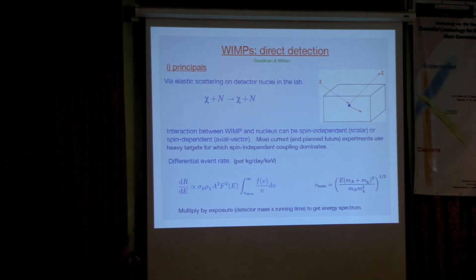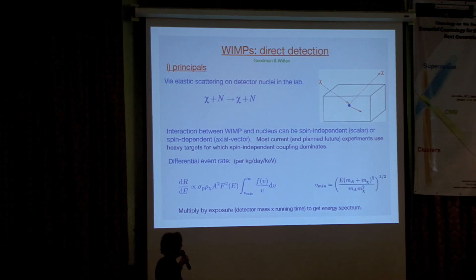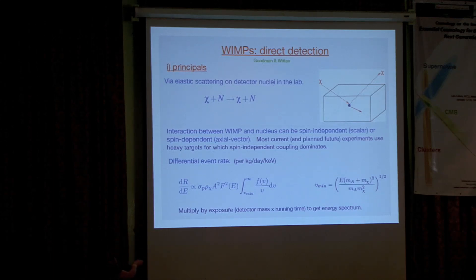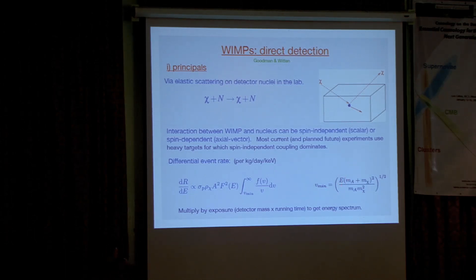There are two types of interaction between the WIMP and the nucleus: spin-independent and spin-dependent. I'll focus entirely on the simpler spin-independent interaction, partly because it's simpler and partly because that's what most current experiments are sensitive to. The differential event rate — number of events per unit detector mass, per unit time, per unit keV — is directly proportional to the interaction cross-section and also the local density, so there's a degeneracy there. The form factor F takes into account that nuclei aren't point particles. Then there's the kinematics of elastic scattering, expressed as an integral over the local WIMP speed distribution, where the minimum speed comes from what's kinematically required to cause a recoil of a given energy. For a real experiment you multiply this by the exposure — detector mass times running time — to get the energy spectrum you'd actually observe.